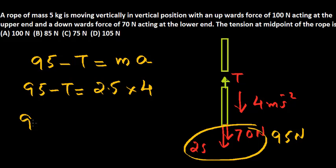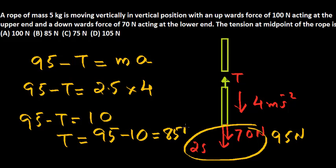So this gives you 95 minus T equal to 4 into 2.5 is 10. From this, tension must be equal to 85 newton.